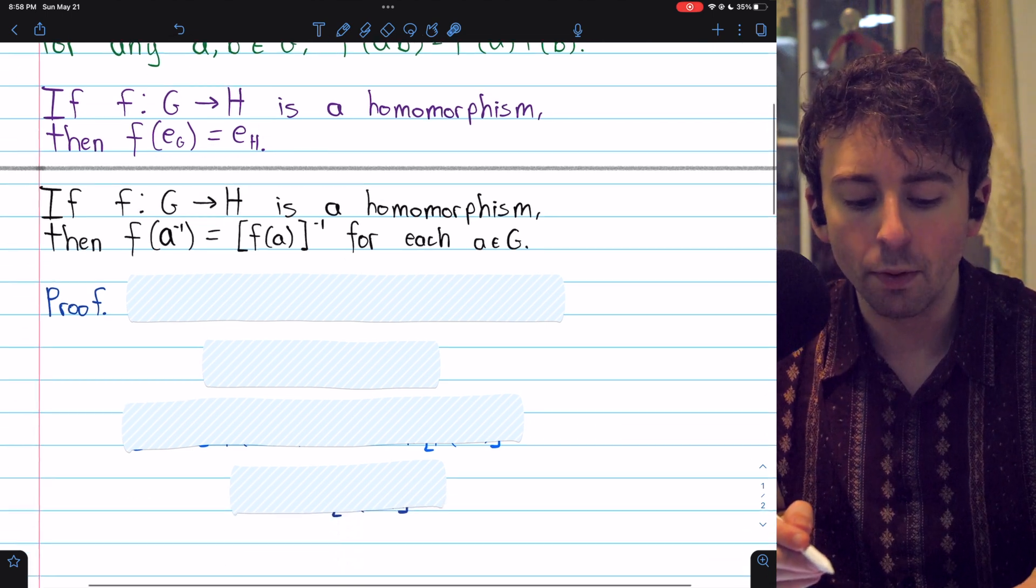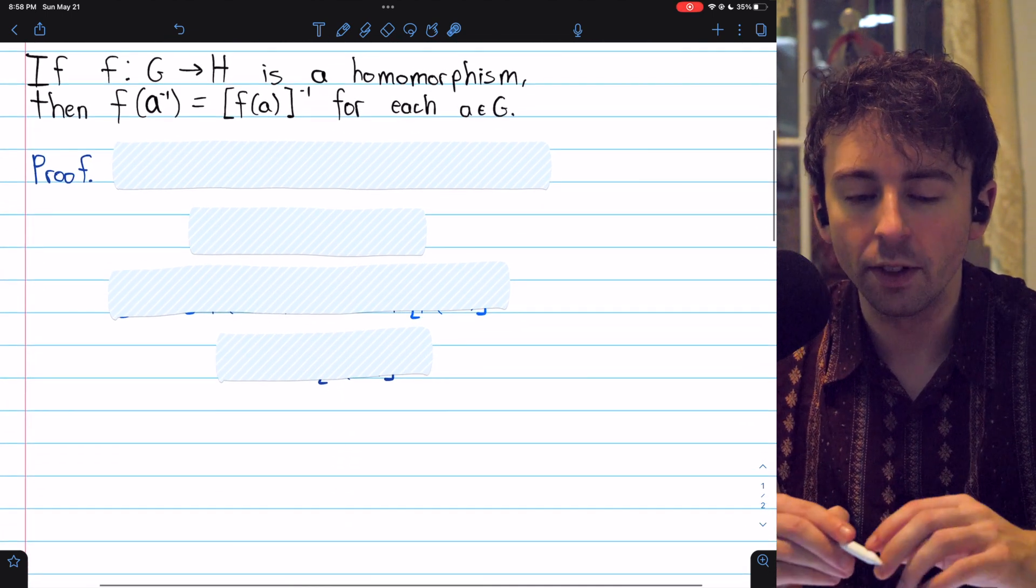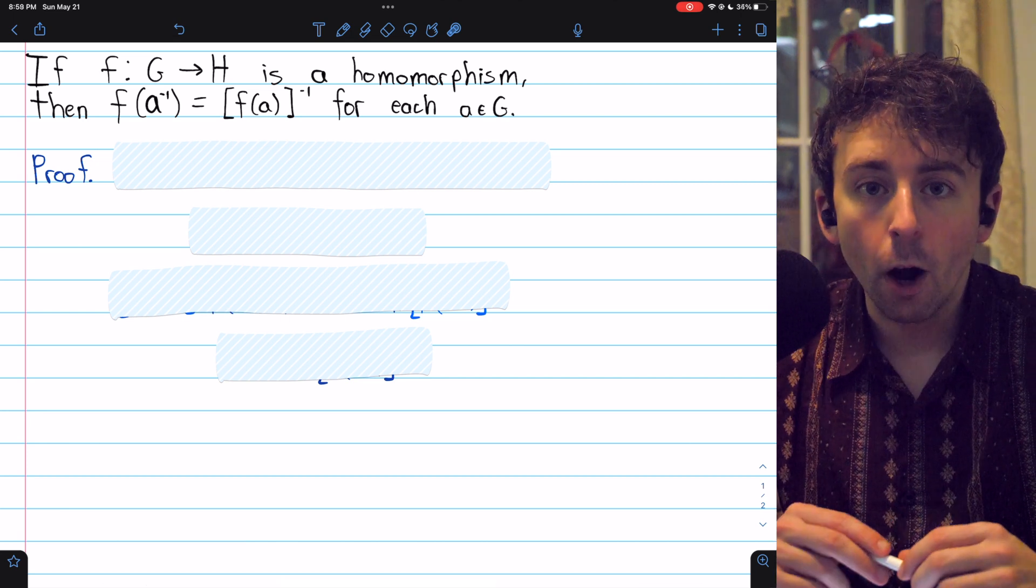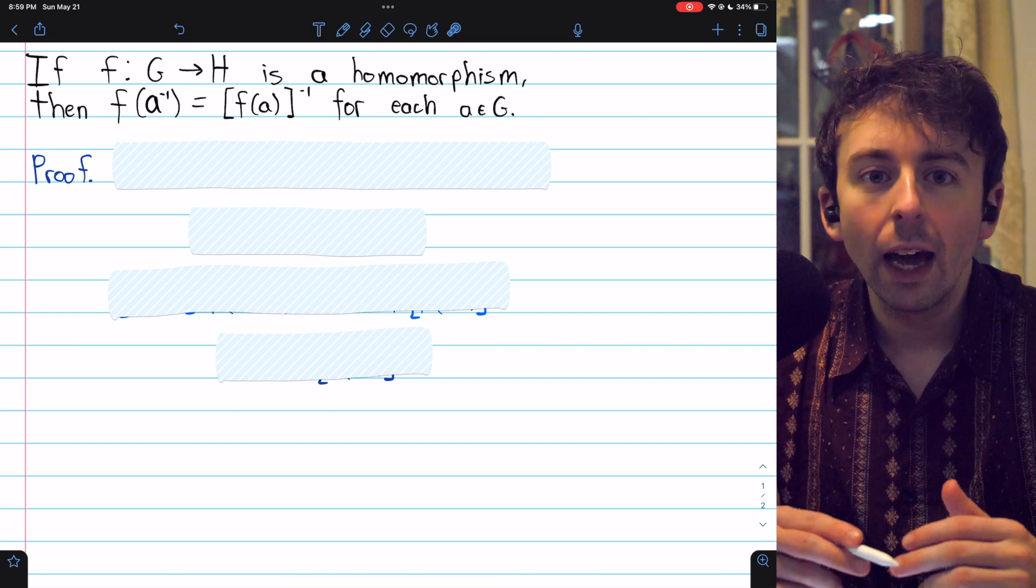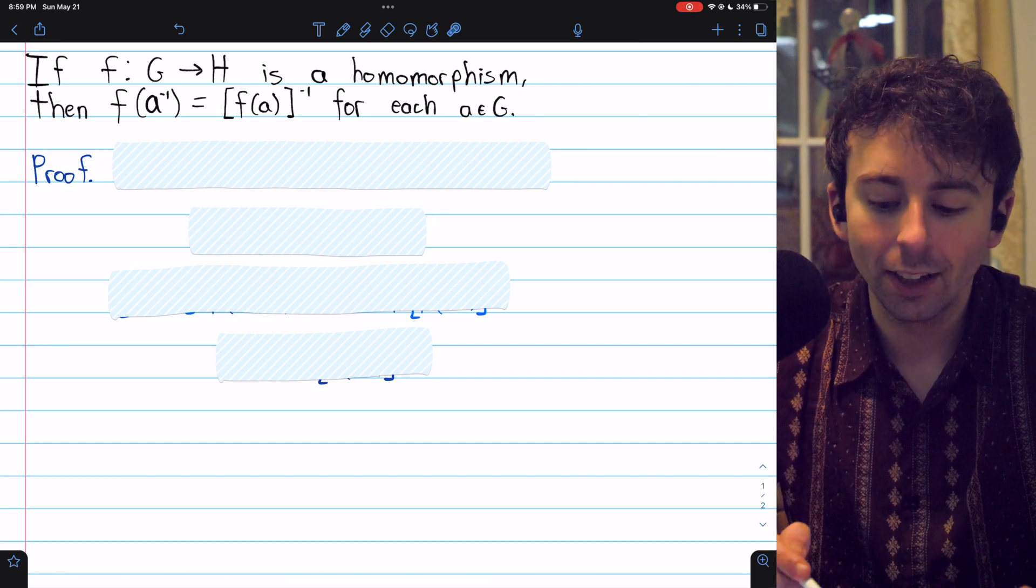But let's get into the quick proof of this result, that a homomorphism maps inverses to inverses. It's pretty useful. All right, we've got our homomorphism f from a group G to a group H, and we've got an arbitrary element from G called a.